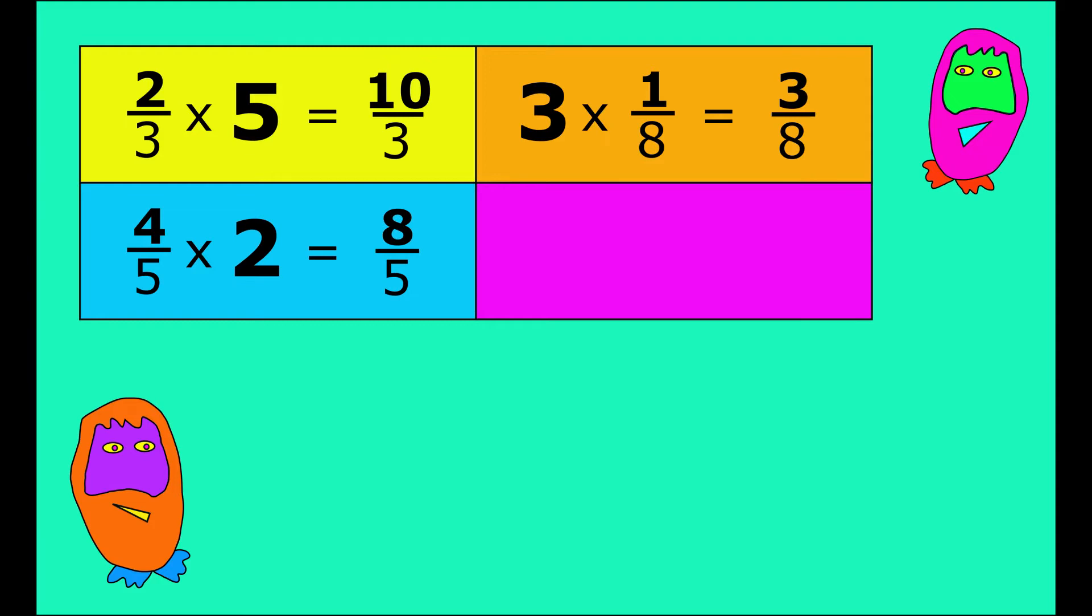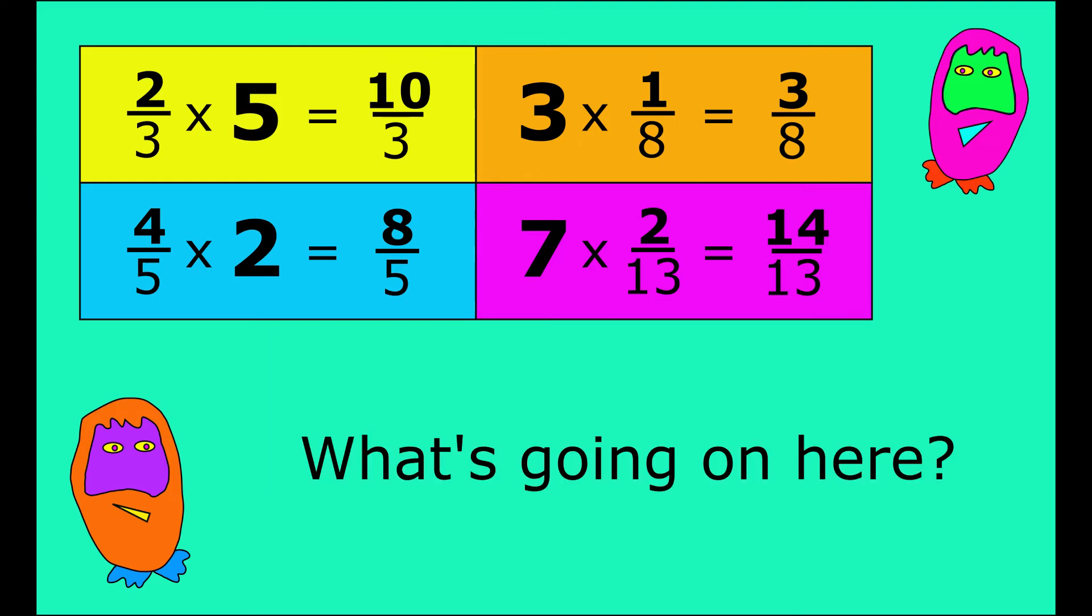Let's take a look at a few examples without the pictures. So two-thirds multiplied by five is ten-thirds. Four-fifths multiplied by two is eight-fifths. Three multiplied by an eighth is three-eighths. And seven multiplied by two-thirteenths is fourteen-thirteenths.